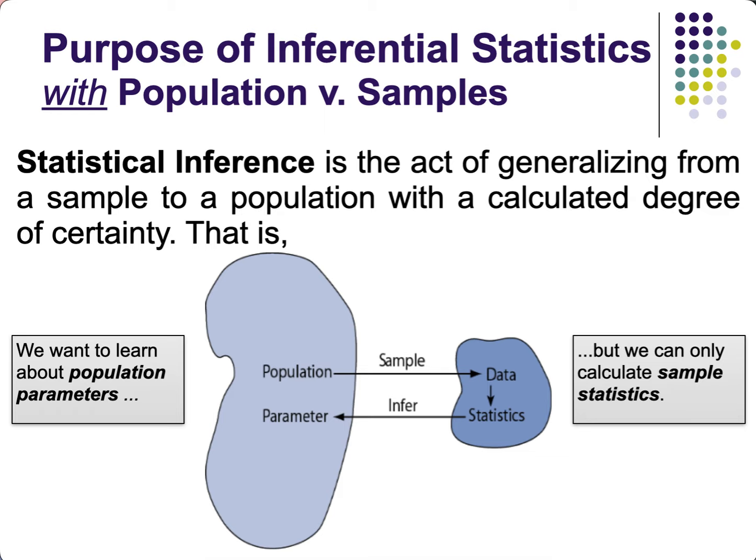We have data from the sample, but we are interested in discovering something about the population. Getting only descriptives from the sample wouldn't be enough to do justice to the population values or parameters we want to discover. Inferential statistics bridges that gap — instead of gathering everybody's data, we use only the sample's data and generalize back to the population.